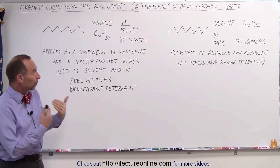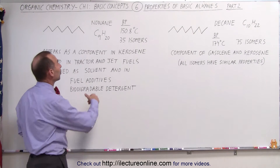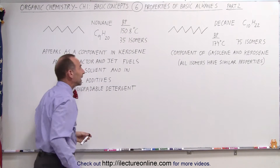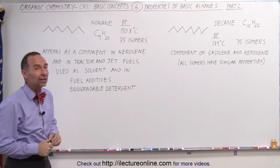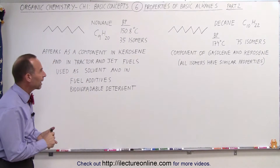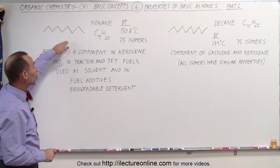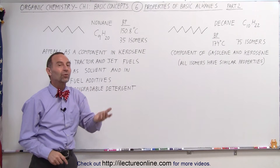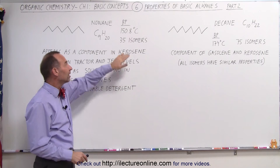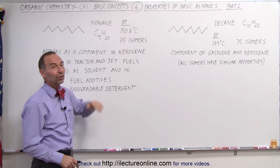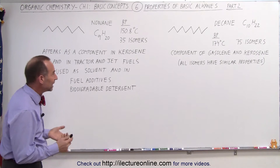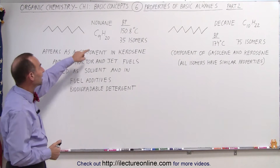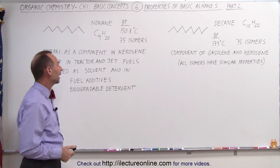Notice that the boiling point continues to increase as you have more and more carbons in the chain. Here we have a boiling point of 150.8 degrees centigrade before the liquid turns into a gas. Also, with more and more carbons in the chain, the number of isomers increases almost exponentially. Now with 9 carbons, we're at 35 isomers, meaning there are 35 different structures that contain 9 carbons and 20 hydrogens.